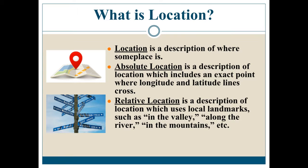And then there's relative location, which is how the average person describes their location. Relative location means not exact — kind of so-so, in the area. It's a description of location which uses local landmarks such as 'in the valley,' 'along the river,' 'in the mountains,' etc. So when you tell someone how to get to your house, you're not going to tell them the exact longitude and latitude — you're going to say make a right turn on this street and I'm down the street from Safeway. That's how the average person describes location, not in an absolute way.